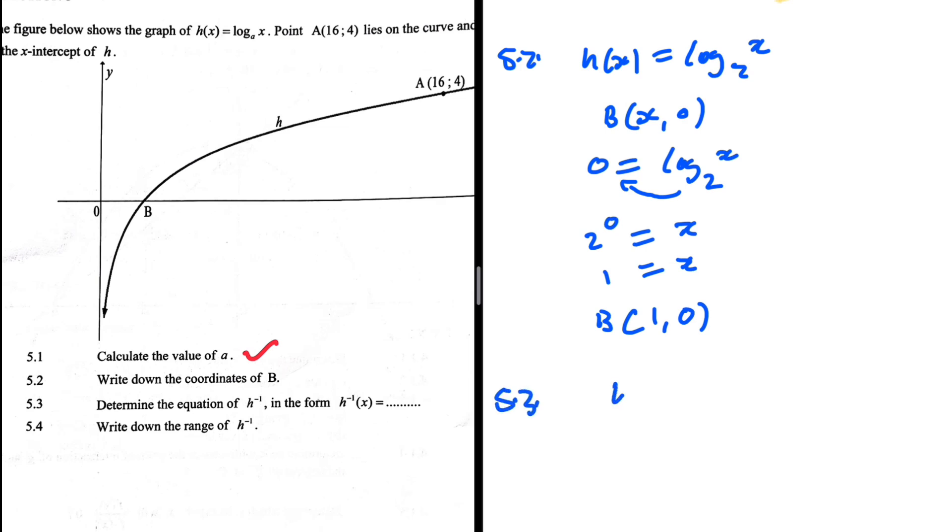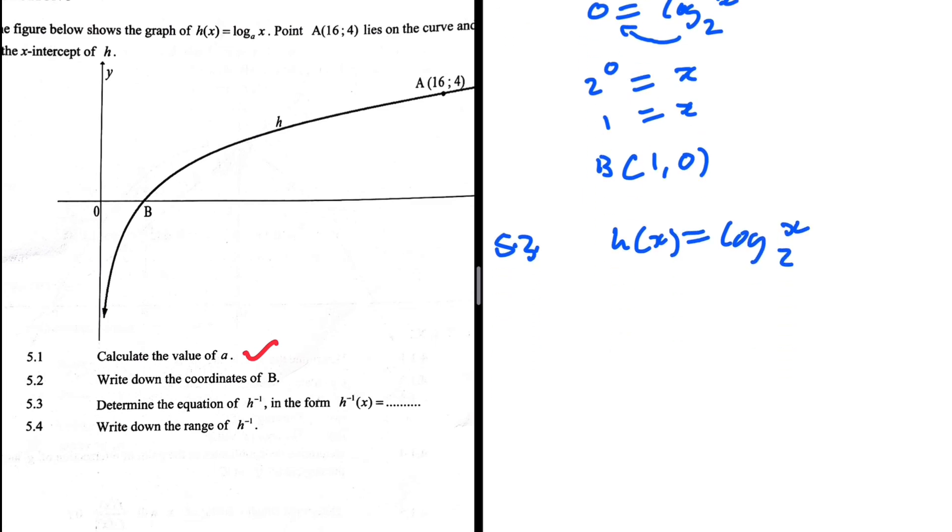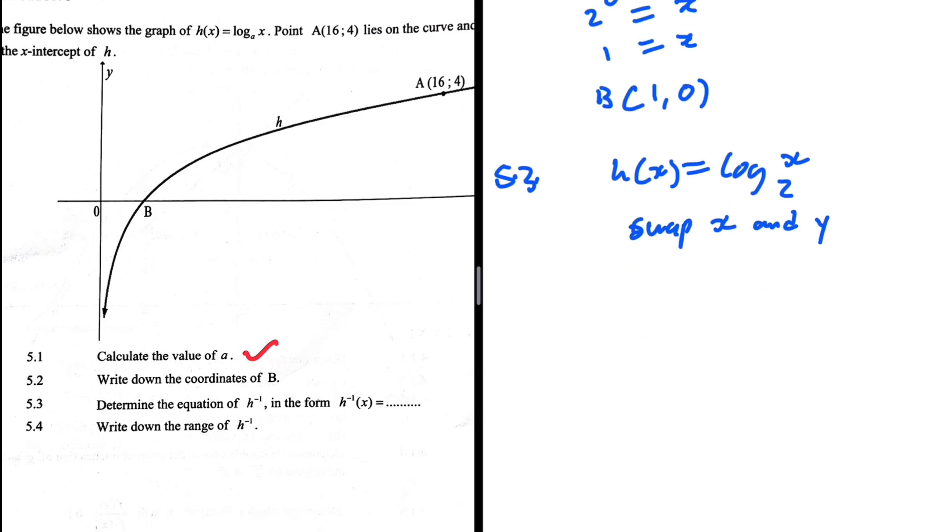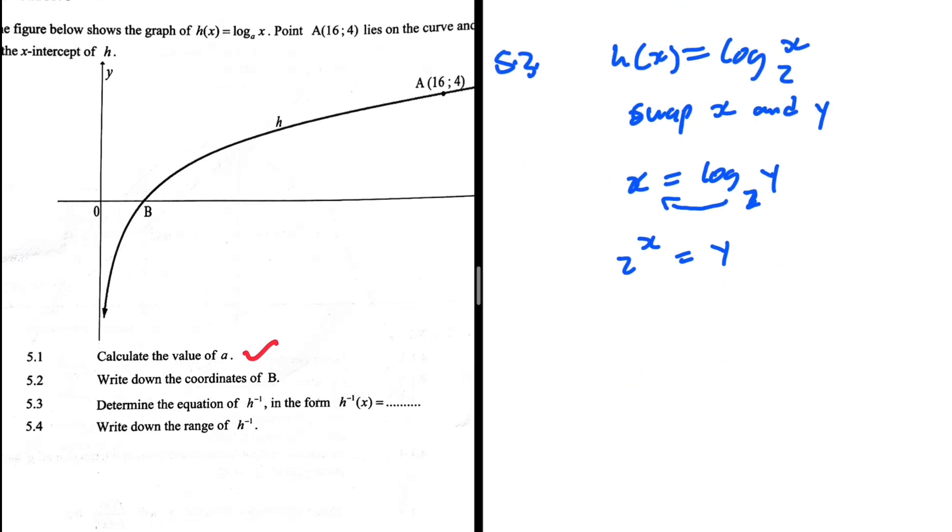We're looking for h inverse. h(x) = log_2(x). The first step in finding the inverse: swap x and y. In place of h(x) we put x, and in place of x we put y. The second step: make y the subject of the formula. Using log laws, we end up with 2^x = y. Let's write it nicely: y = 2^x.